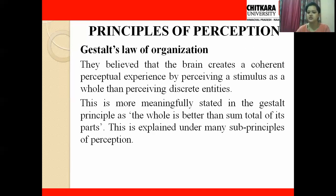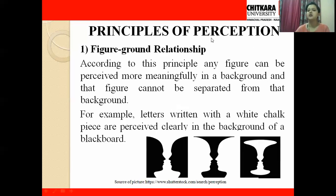The first sub-principle is the figure-ground relationship. According to this principle, any figure can be perceived more meaningfully against a background, and that figure cannot be separated from its background. For example, letters written with a white chalk piece are perceived clearly against the background of a blackboard. There will always be a relationship between the figure and the ground, and removing either the figure or the ground from a picture will affect how it is perceived.